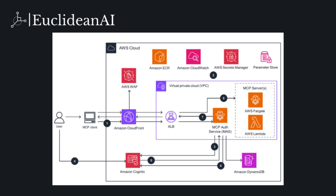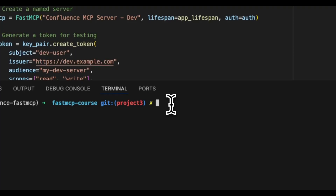DynamoDB is used for storing persistent data such as user sessions, tokens, or application state. The architecture can also leverage Amazon ECR for container images, CloudWatch for logging and monitoring, Secrets Manager, and Parameter Store for secure configuration.